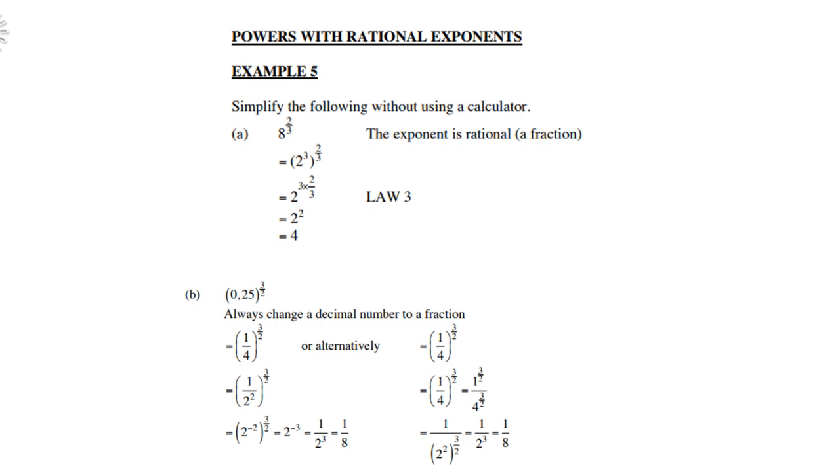Or alternatively, you can take the 1/4 to the power 3 over 2 and then distribute the 3 over 2 into the bracket. Then you get 1 to the power 3 over 2 and you get 4 to the power 3 over 2. Of course, 1 to any exponent remains 1, and then the other one will be 1 over 2 cubed, which is 1/8.